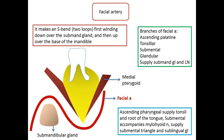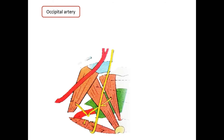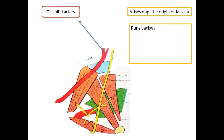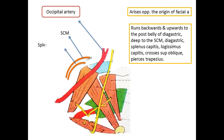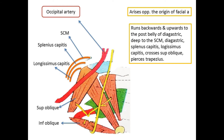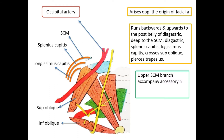The occipital artery arises from the external carotid artery opposite the origin of the facial artery. It runs backwards and upwards, deep to the lower border of the posterior belly of the digastric, crossing the carotid sheath and the accessory and hypoglossal nerves. It runs deep to the mastoid process and to the muscles attached to it — sternocleidomastoid, digastric, splenius capitis, and longissimus capitis — then crosses the rectus capitis lateralis, superior oblique, and semispinalis capitis muscles at the apex of the posterior triangle, finally piercing the trapezius to lie along the greater occipital nerve.